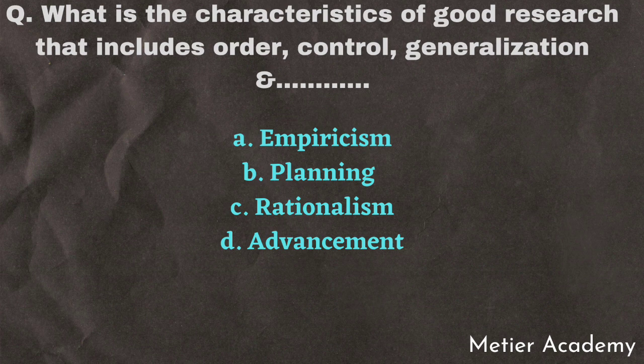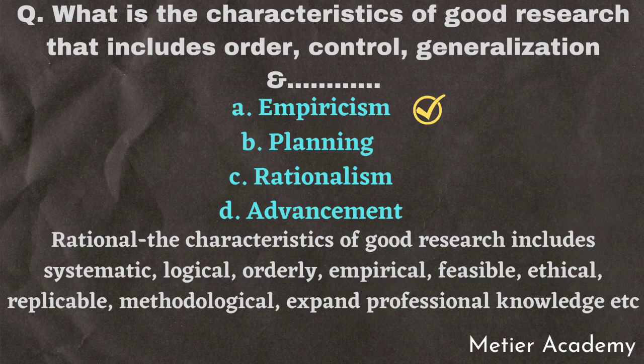The last question is: what is the characteristic of good research that includes order, control, generalization, and blank? This question was asked in AIIMS Raipur Nursing Officer Exam 2019. The correct answer is Option A, Empiricalism. The rationale is that the characteristics of good research are: systematic, logical, empirical, feasible, ethical, replicable, etc. Knowing this list, you can select answer A, Empiricalism.